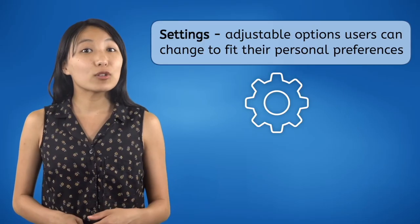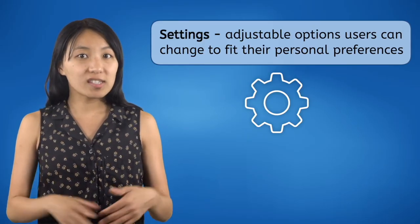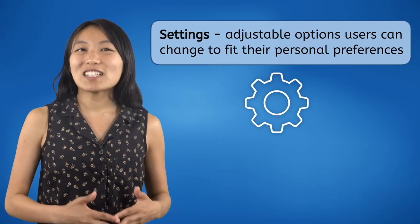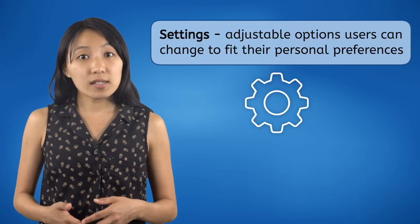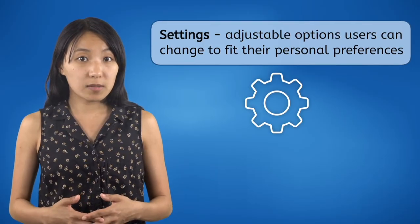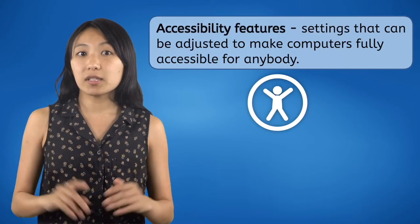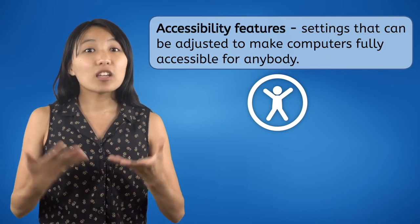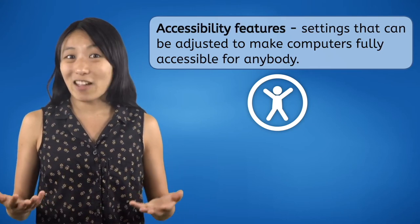Every operating system includes settings — adjustable options that we, the users, can change to fit our personal preferences. Many of these settings can even be necessary for users with disabilities. We call these types of settings accessibility features, because they make computers fully accessible to anybody and everybody.